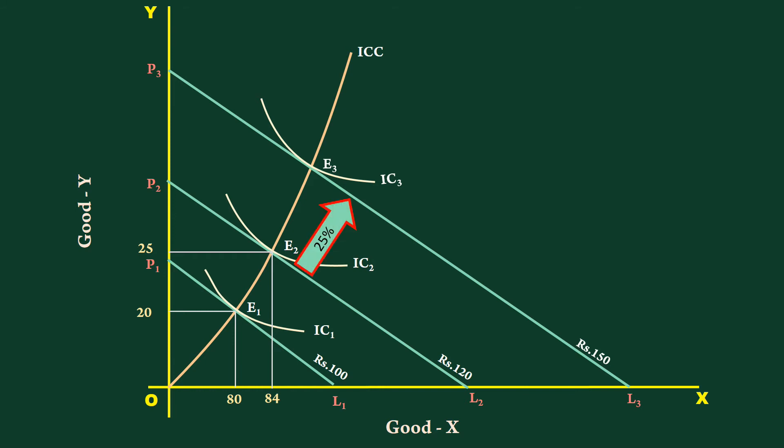The consumer buys 40 units of good Y. Percentage increase is 60 percent. Percentage increase in quantity is greater than percentage increase in income.